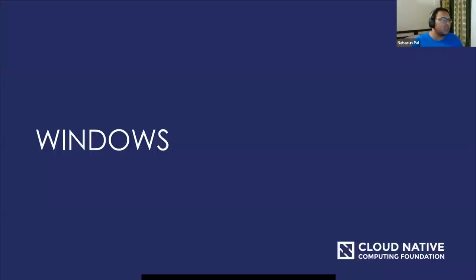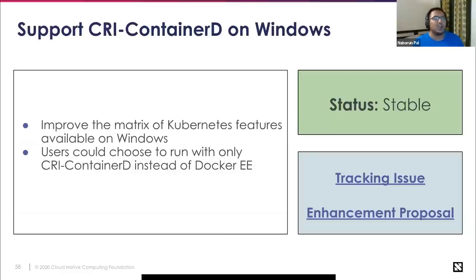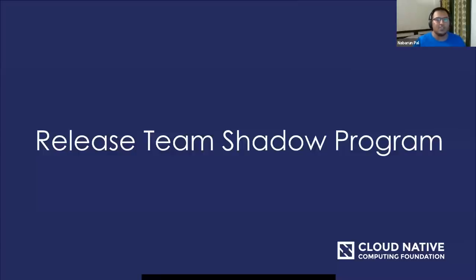For Windows, there is one enhancement: supporting CRI containerd on Windows. This improves the range of Kubernetes features usable on Windows by going through the containerd spec. Users can now choose to run containerd CRI instead of Docker Enterprise, and this change going to stable gives implementers a path to implement Kubernetes-specific features not available in the Docker API but available in the container runtime interface.